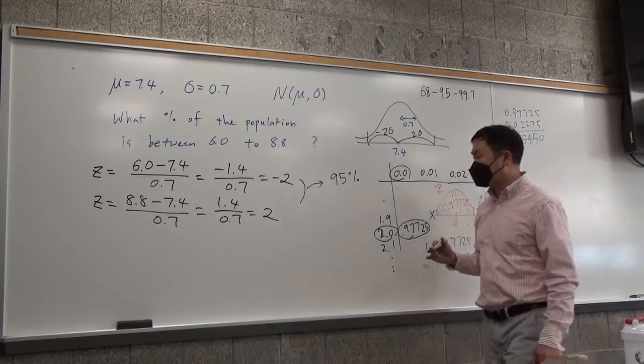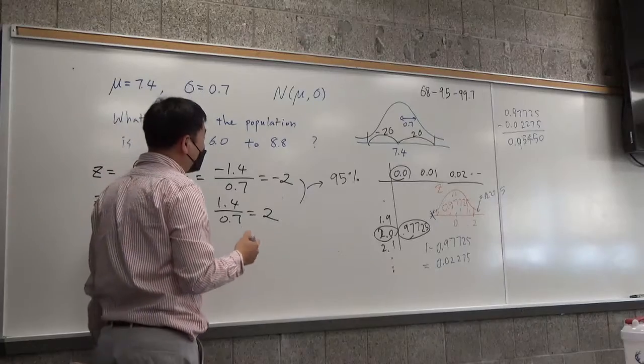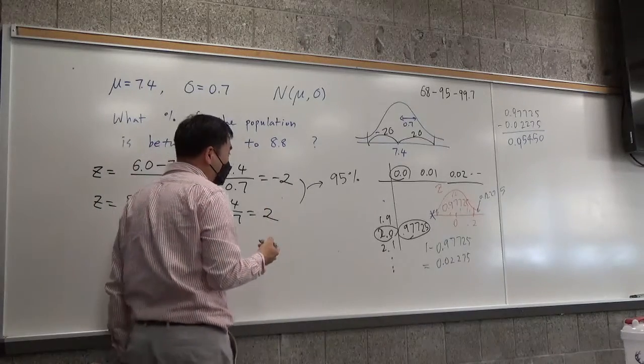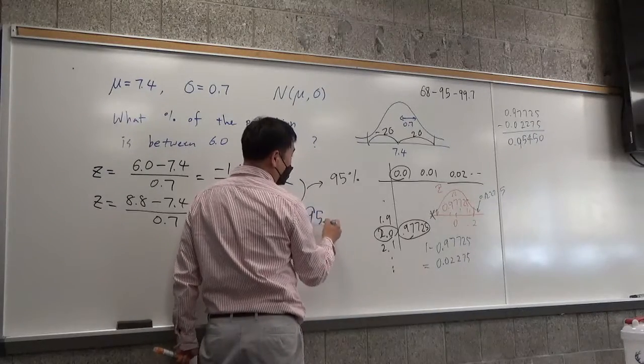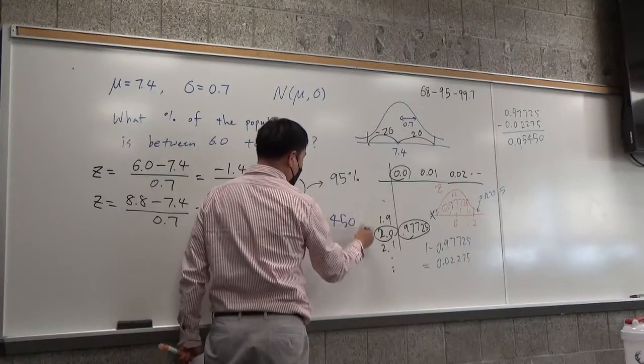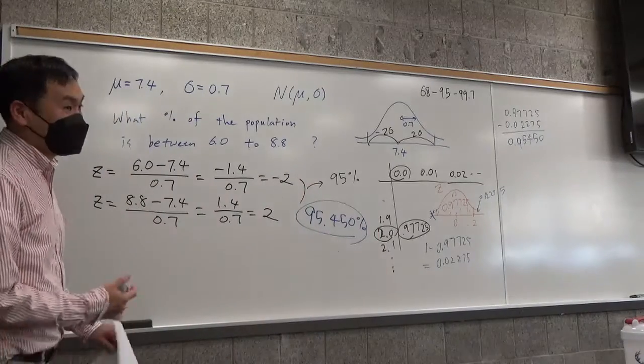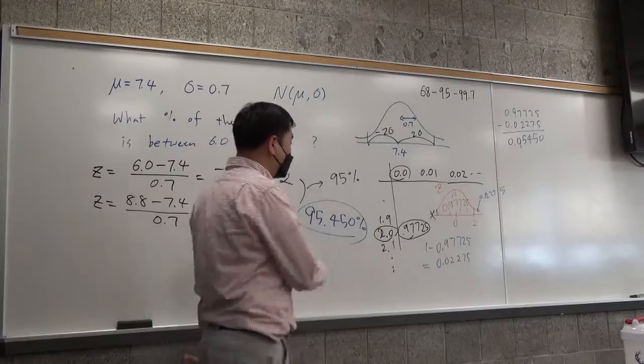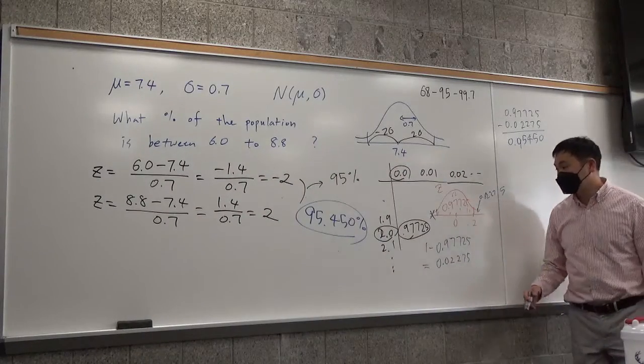So what that means is that if you want a more accurate answer, assuming that the given distribution is perfectly normal, then the better answer would be 95.450%. So that would be more accurate. But since this portion is just about the empirical rule, 95% is good enough.